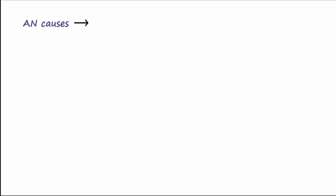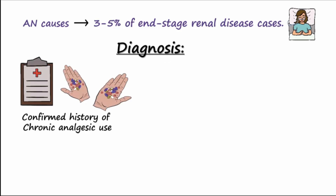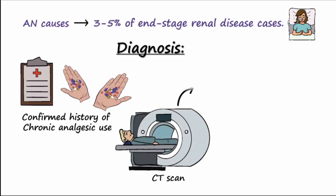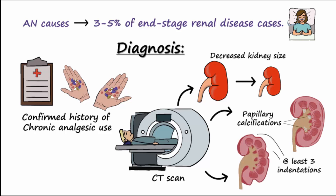It is estimated that AN causes 3% to 5% of end-stage renal disease cases. Diagnosis involves confirming a history of chronic use of analgesics. On a CT scan, decreased kidney size and papillary calcifications are noted, along with at least 3 indentations interrupting the normal smooth convex outline of the kidney.